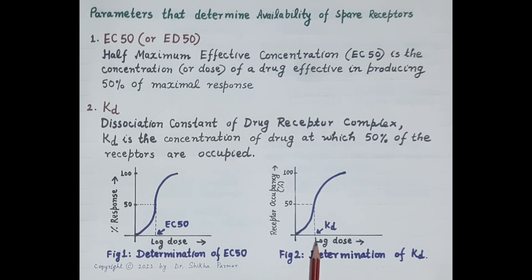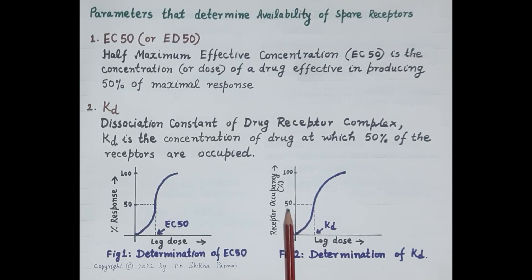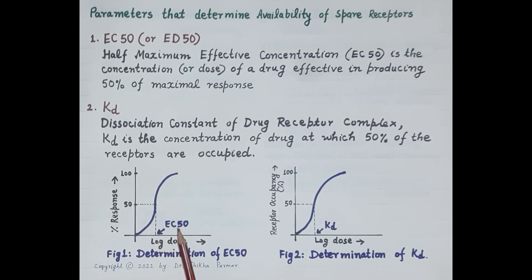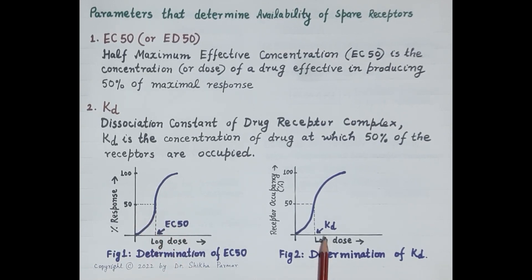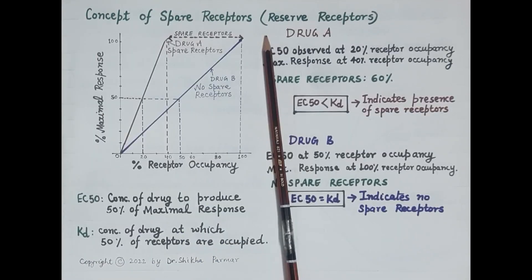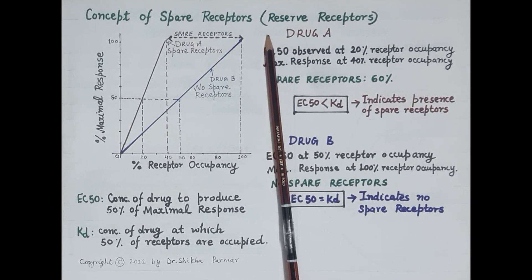Regardless of the drug, when it is given at a concentration equal to its dissociation constant KD, 50% of the receptors will be occupied. So, EC50 is the dose which produces 50% of the maximum response, while KD is the dose that occupies 50% of the available receptors.